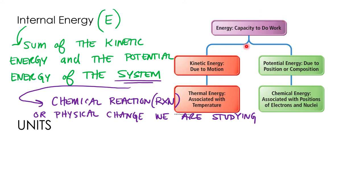So here we have energy as the capacity to do work, which is the sum of kinetic energy — energy due to motion — and potential energy — energy due to position or composition. For chemical systems, kinetic energy is referred to as thermal energy, measured as a function of temperature. Potential energy is associated with the position of electrons relative to the protons in the nucleus, and that charge attraction determines its potential energy.